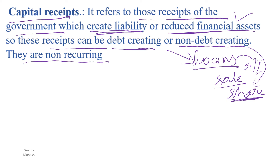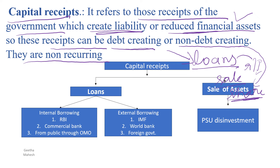Government borrows loans and advances only when necessary. You can see in the flowchart that capital receipts are of two types: loans and sale of assets. Loans can be of two types: internal borrowing, where the government borrows within the country — directly from the RBI, indirectly from commercial banks, and from the public through open market operations — and external borrowing, where the government borrows from the IMF, World Bank, or foreign governments.